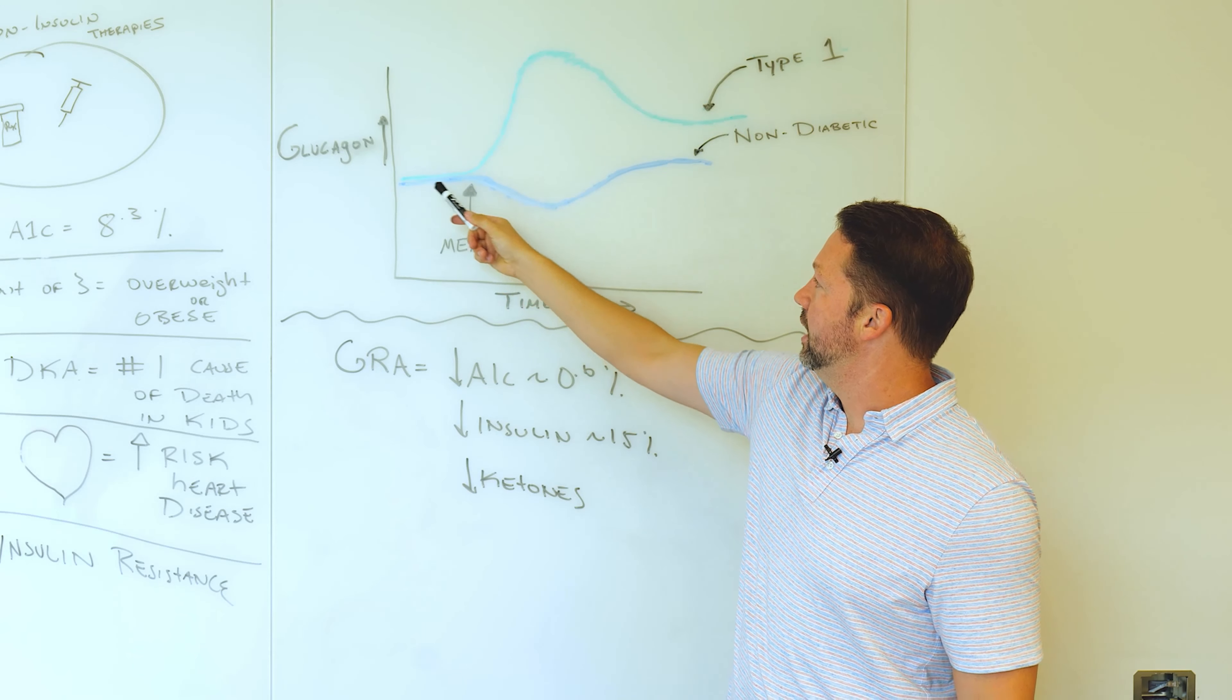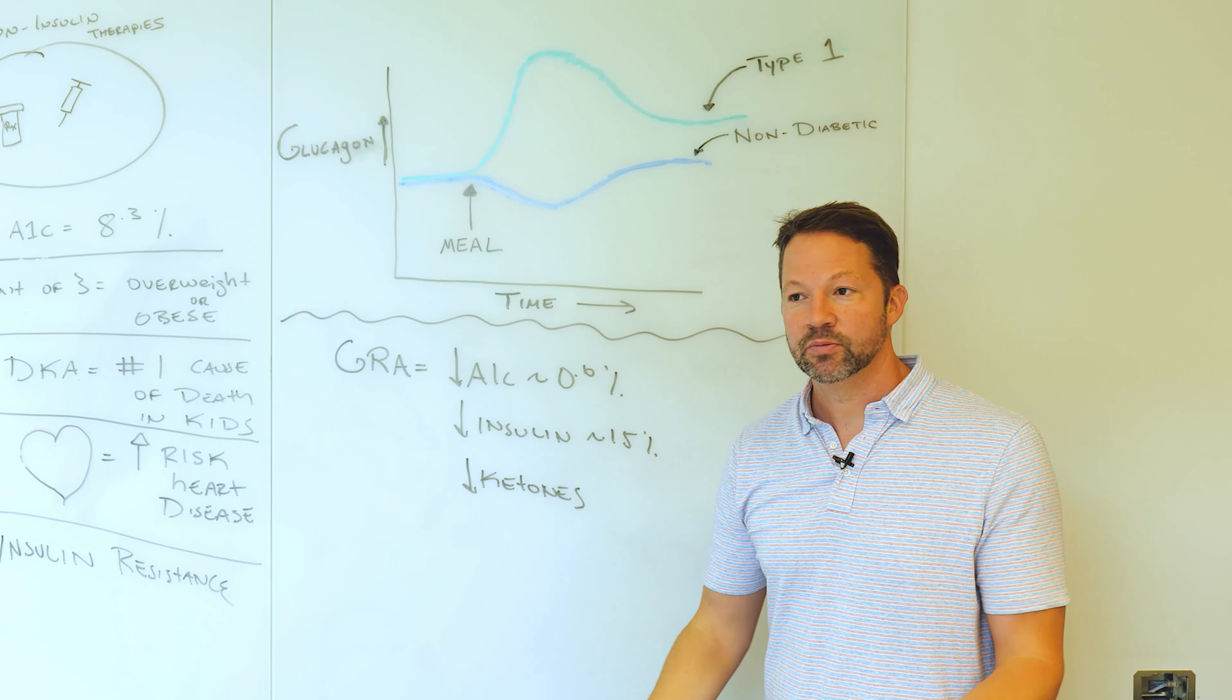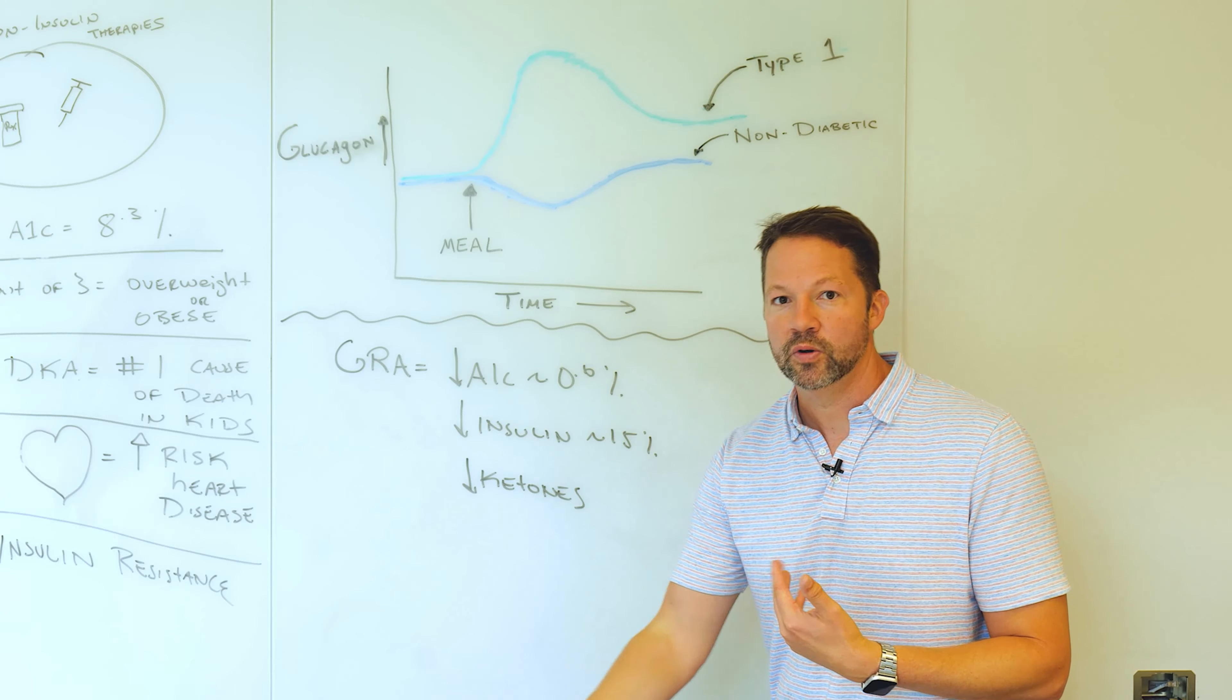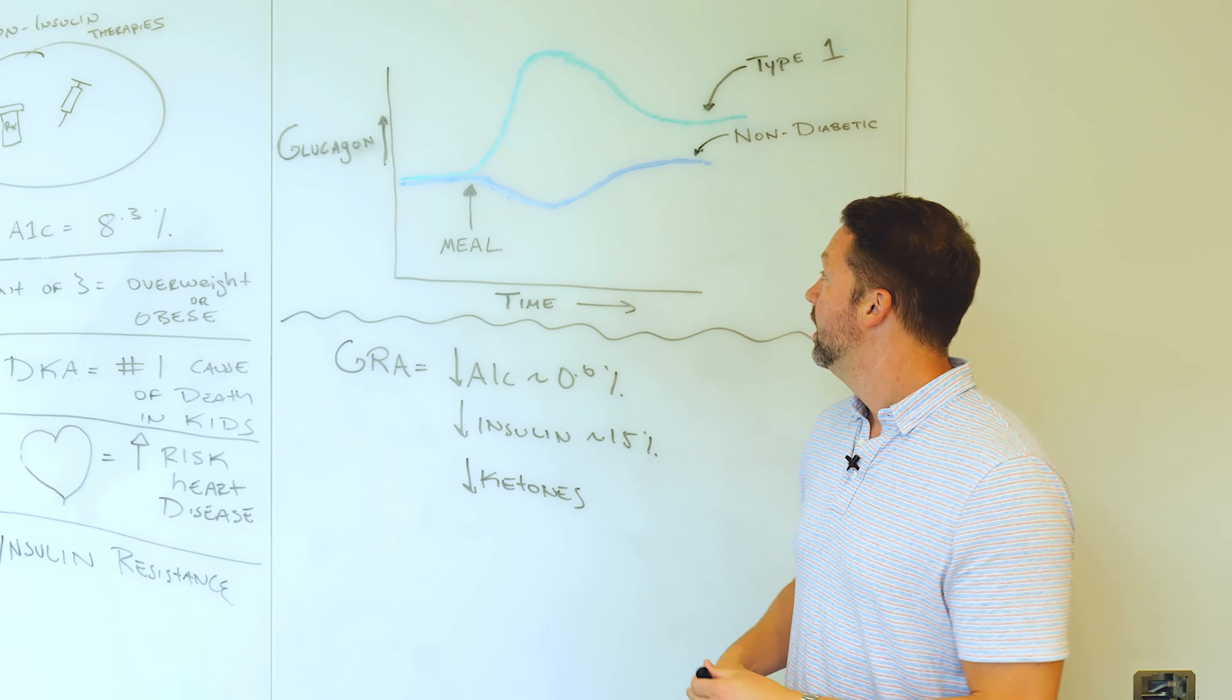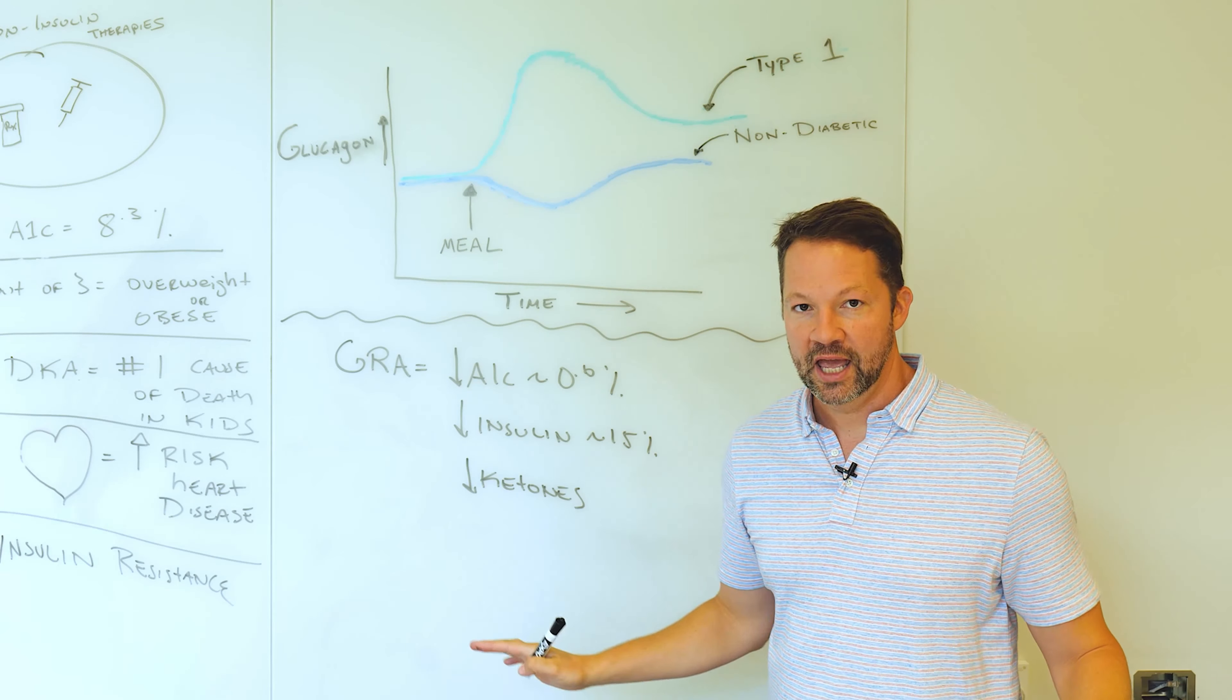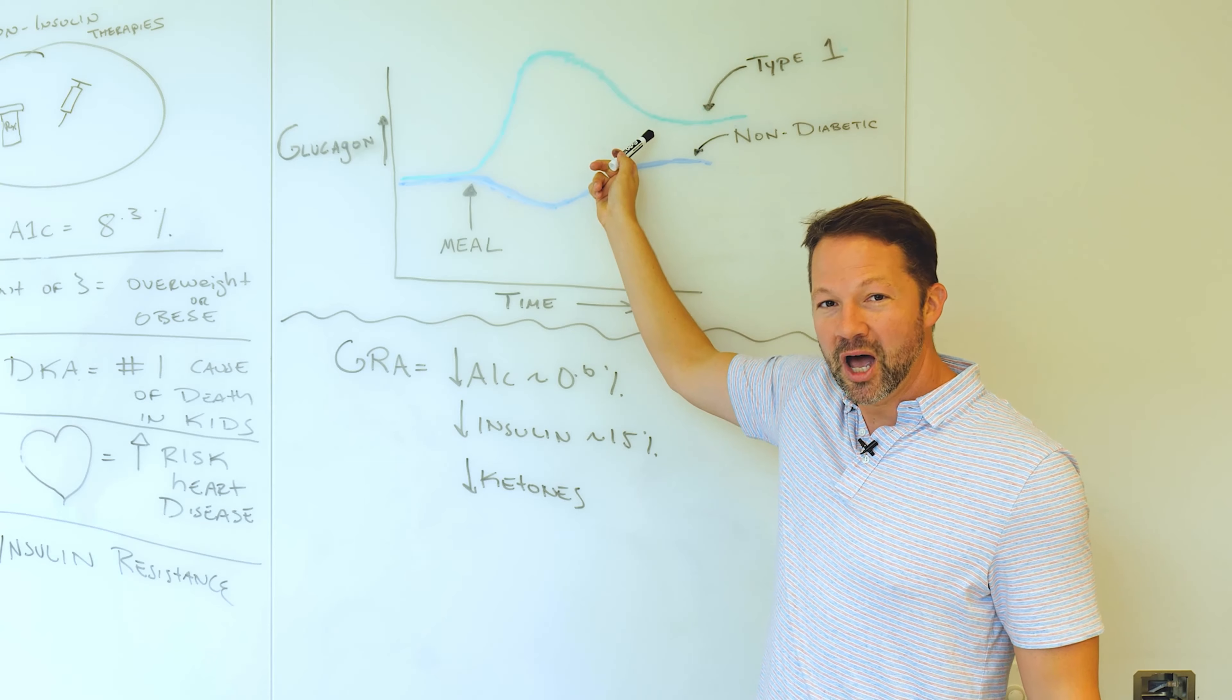So when normal or non-diabetic people eat, let's say we give them a meal right here, their levels of glucagon actually go down typically after they eat a meal. That makes sense. When you're eating something that has sugar or calories in it, you don't need a hormone to raise your blood sugar. So the body kind of decreases glucagon and normally increases insulin. And with people with type one diabetes, that's completely flipped on its head. That if you give people with type one diabetes a meal, even with insulin, that their glucagon levels actually go up.